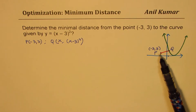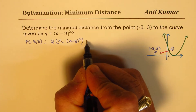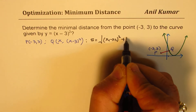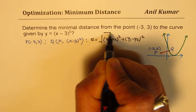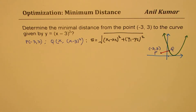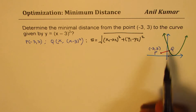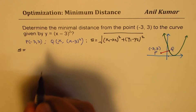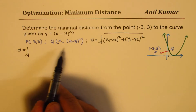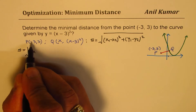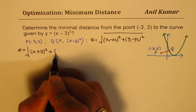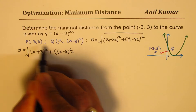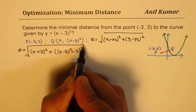Since we have to minimize the distance from P to Q, we can use the distance formula: s equals the square root of (x1 minus x2) squared plus (y1 minus y2) squared. The order doesn't matter because we are squaring it. So substituting our values, the distance s equals the square root of (x plus 3) squared plus ((x minus 3) squared minus 3) squared.